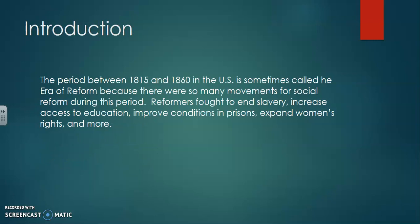The period between 1815 and 1860 in the United States is sometimes called the era of reform because there were so many movements for social reform during this period. Reformers fought to end slavery, increase access to education, improve conditions in prisons, and expand women's rights, and much more. Today we're not going to be talking about the reforms necessarily — we're going to talk about what drives these reforms to take place and this movement to begin.